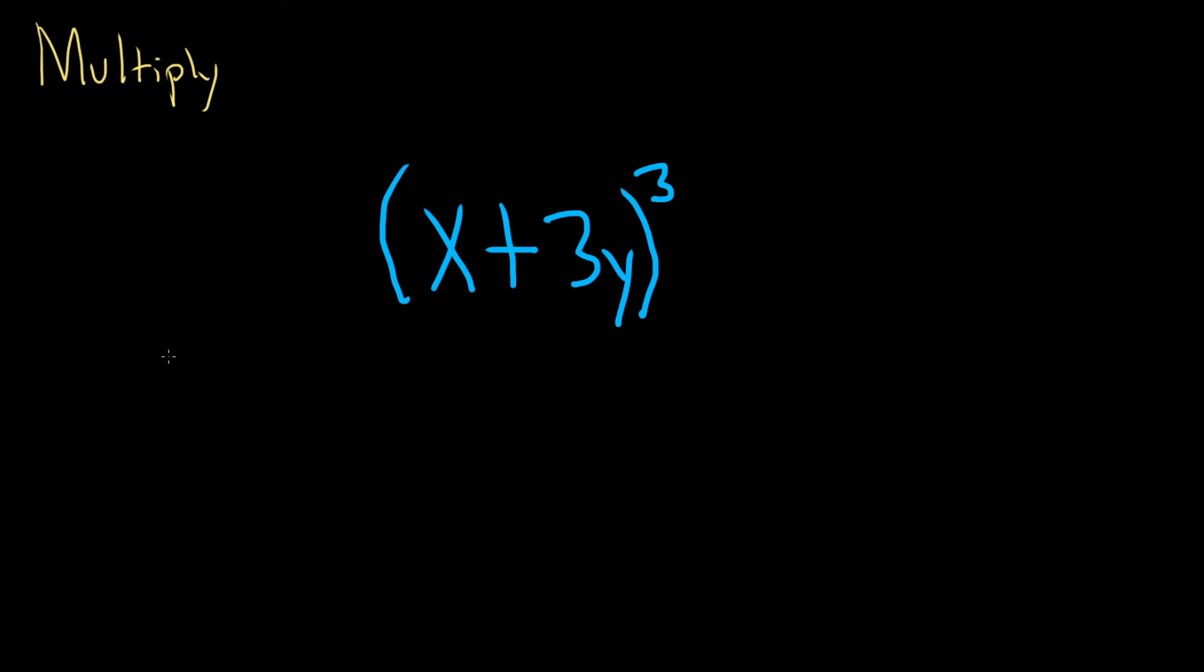There's a three here, so we'll just write it three times. x plus 3y. We'll write it again, x plus 3y. And then one more time, x plus 3y.